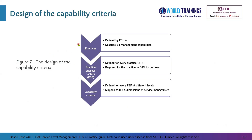Every practice has its own practice success factors. In ITIL we have 34 management capabilities or practices — service level management is one of them, along with others such as change enablement, risk management, and service request management. Every practice has its own practice success factors, usually ranging between two to four. This practice has two practice success factors noted earlier.